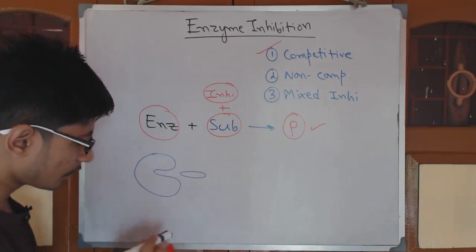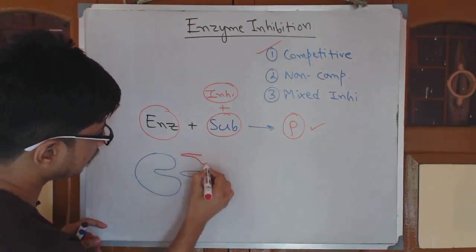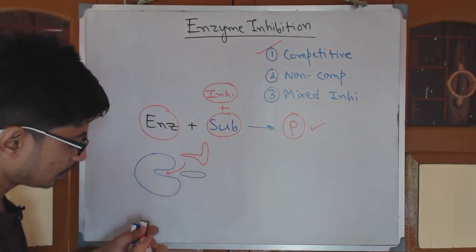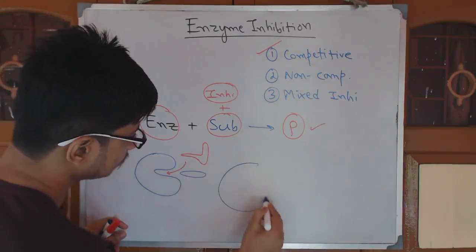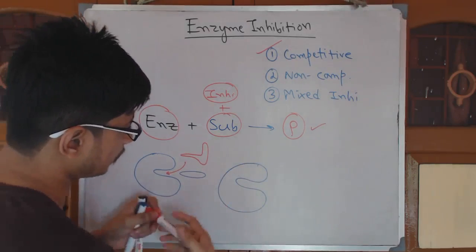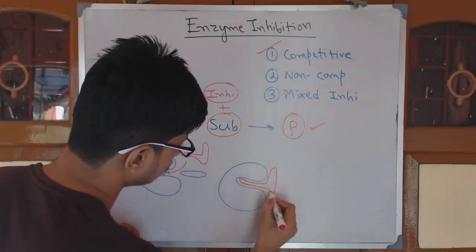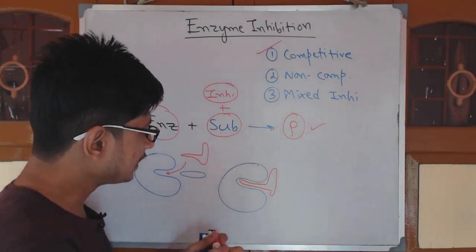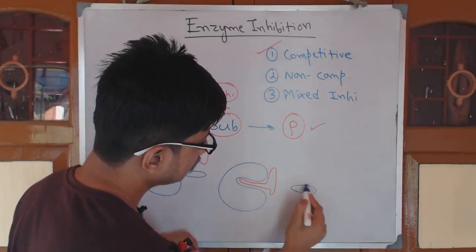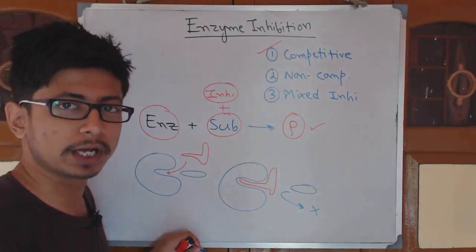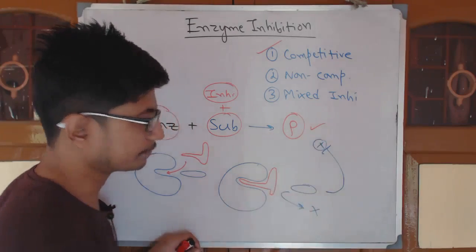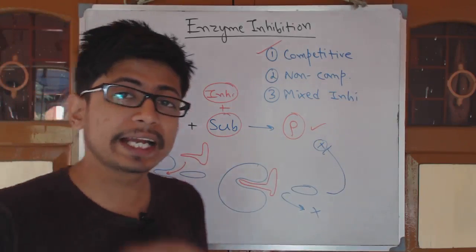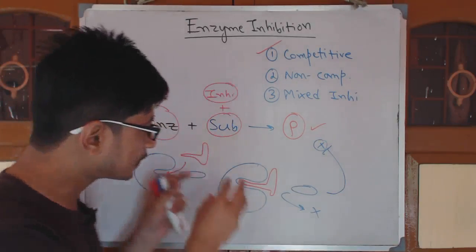The inhibitor mimics the structure of the substrate, so it can bind to the enzyme's active site. As the inhibitor occupies the active site, the enzyme cannot interact with the substrate — the substrate cannot bind — so product formation is halted. This is one way of competitive inhibition: binding to the active site of the enzyme. If substrate binds, you get product; if inhibitor binds, no product.